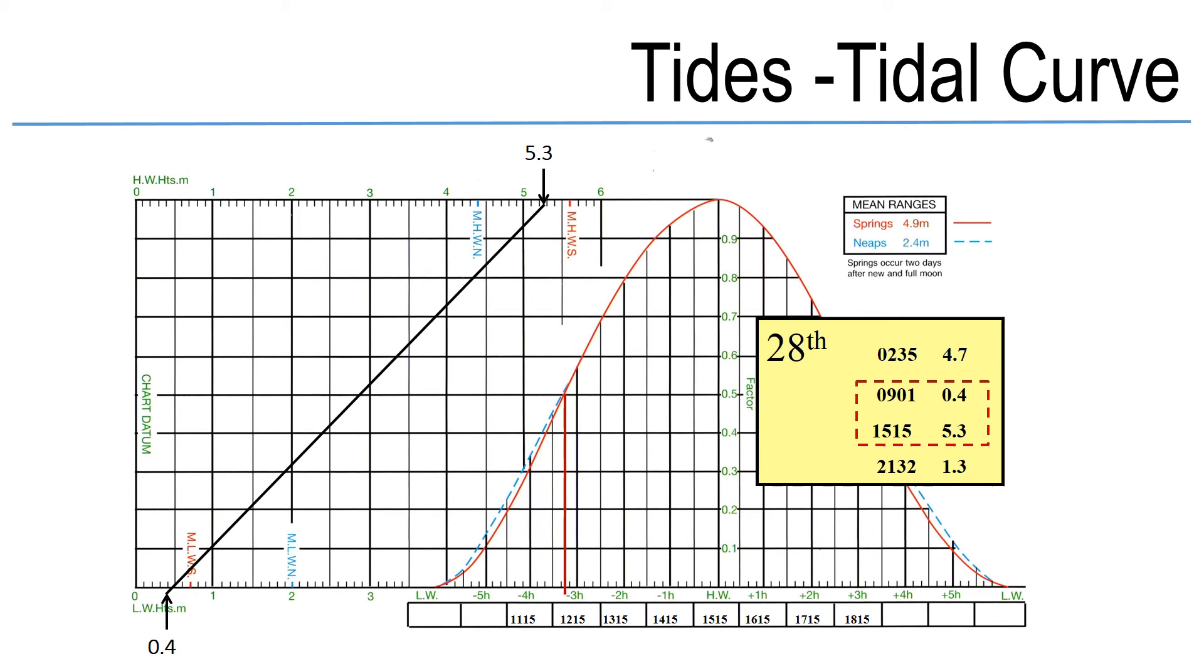I can work that out by simply taking my low water height from my high water height. So in this example 5.3 metres minus 0.4 metres gives me 4.9 and looking at that mean ranges box tells me that it's springs and therefore I need to use the solid red line.